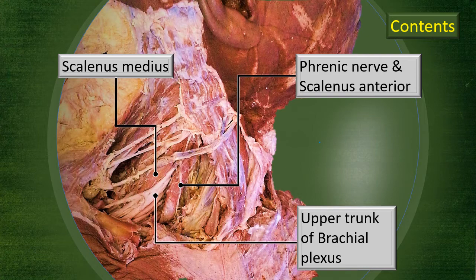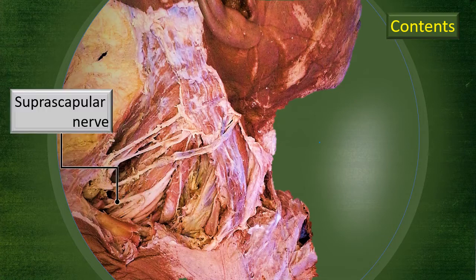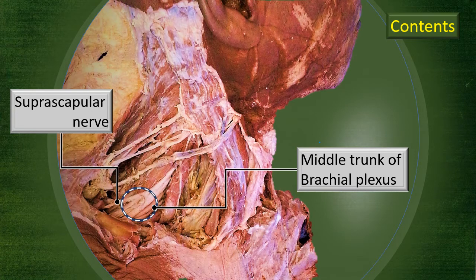This is yet another specimen. Here the phrenic nerve and the scalenus anterior are well seen. The scalenus medius is behind, and the upper trunk of the brachial plexus is also clearly visible. That is Erb's point. The suprascapular nerve can be seen emerging from the upper part of Erb's point, running posteriorly and laterally towards the upper edge of the scapula. Along with the corresponding artery, it goes to supply the supraspinatus and then the infraspinatus. The middle trunk of the brachial plexus is also well seen in this specimen.